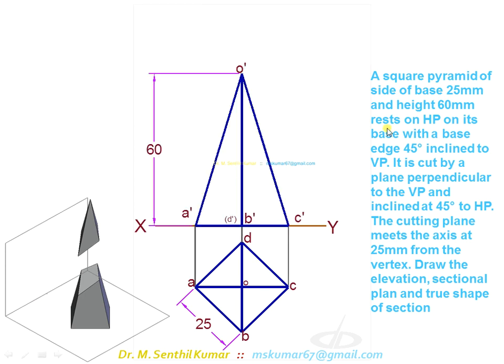Then you go for the cutting, the section plane. It is cut by a plane perpendicular to VP. If we say it is perpendicular to VP, it is seen as a line in front view. So in the front view, introduce the section line. That line is inclined at 45 degrees to HP, so a 45 degree line this way or this way, and 25mm from the vertex.